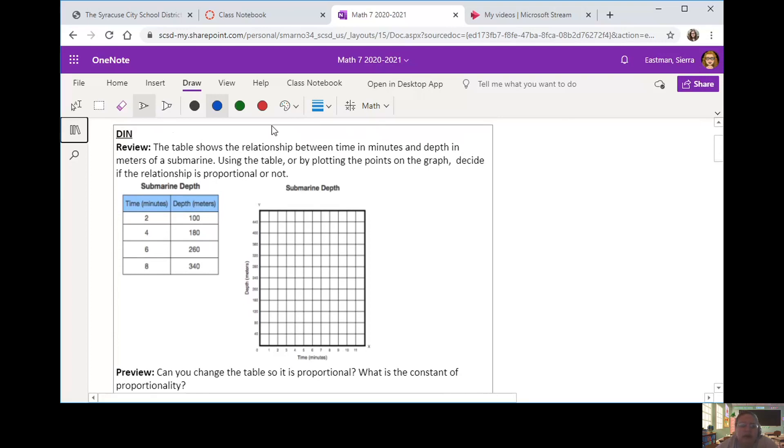All right, here we go. I am actually not going to graph my submarine depth here, because we can already determine, just from the table, whether it is proportional or not. We want to take our X value, which would be the time, and our Y value, which would be the depth, and we need to check for each one.